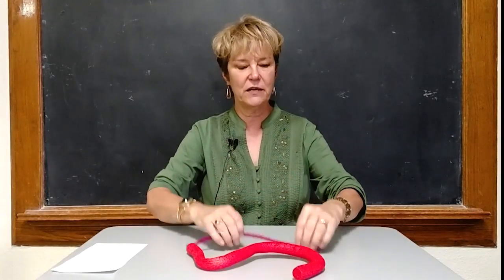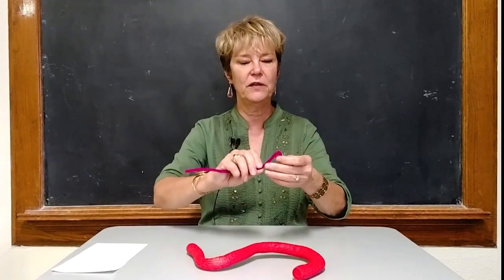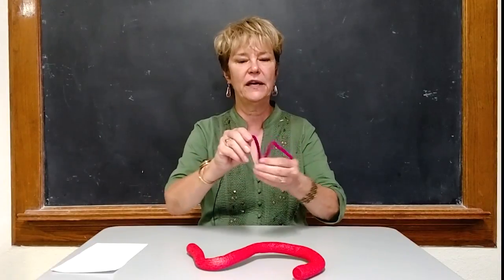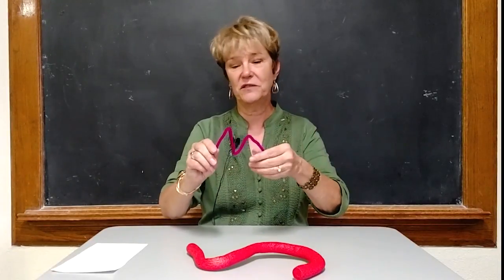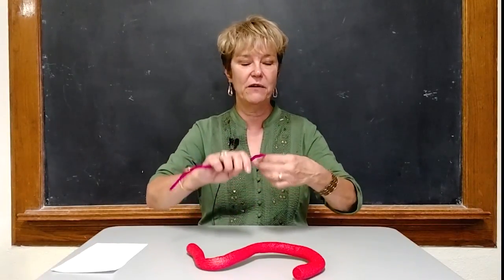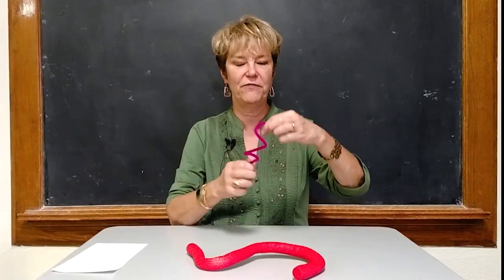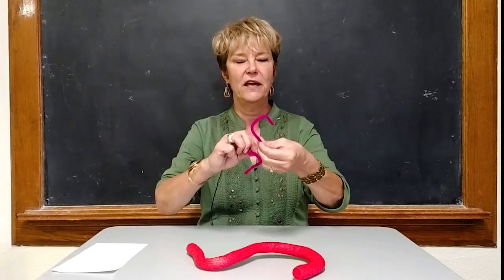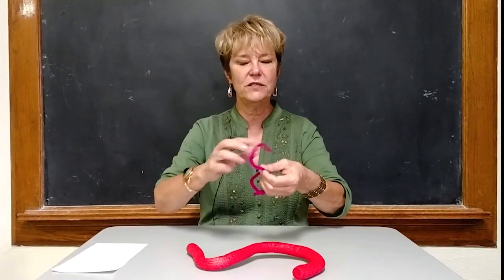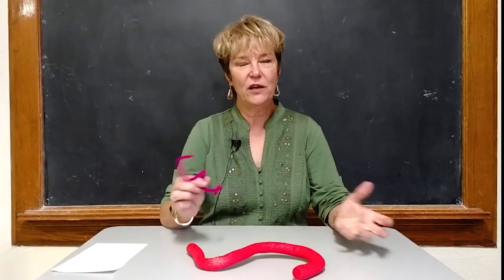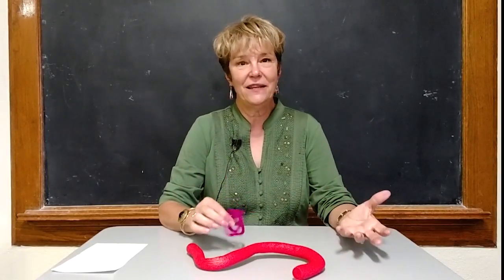And then they could make — this is a pipe cleaner — and they could just make a zigzag line. And sometimes they might make a spiral line, which they just wrap around their fingers and make a spiral line. So I encourage the children to make lines with anything they have.